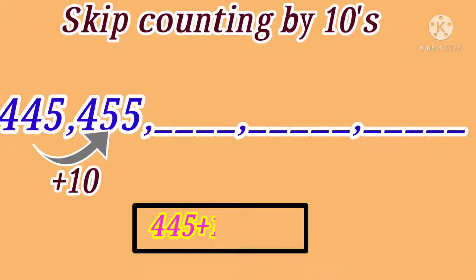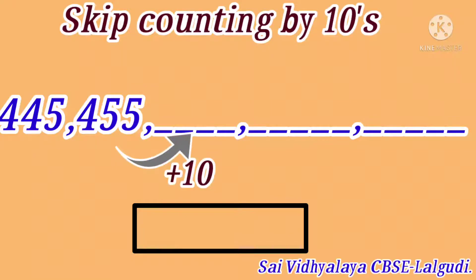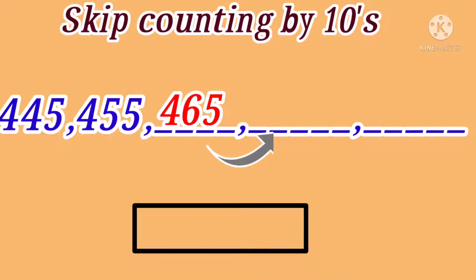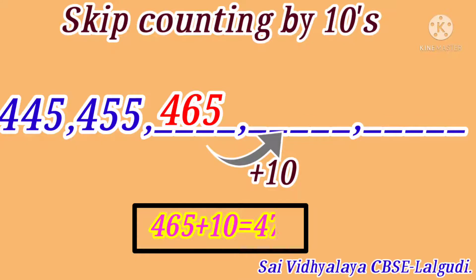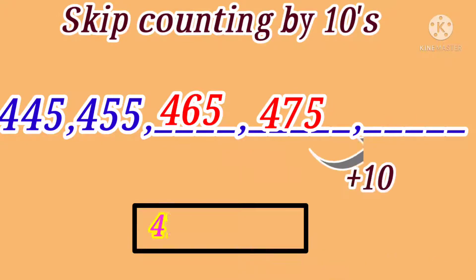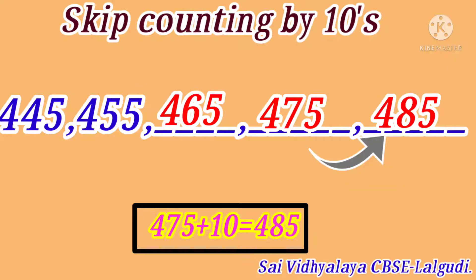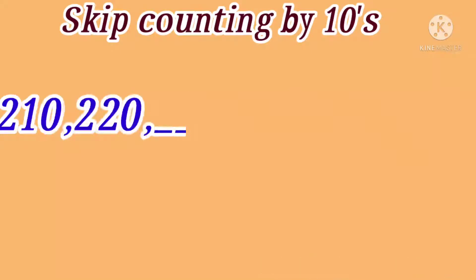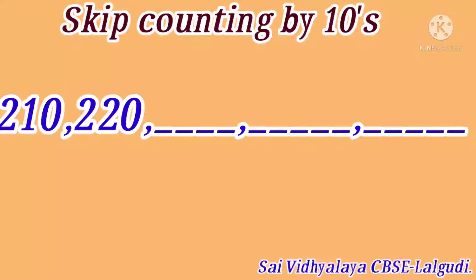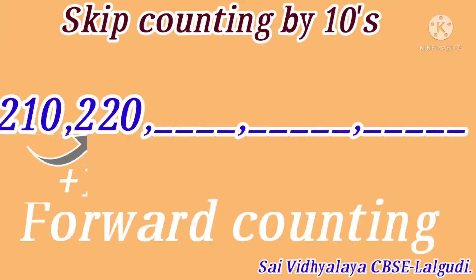445 plus 10 is equal to 455. 455 plus 10 is equal to 465. 465 plus 10 is equal to 475. 475 plus 10 is equal to 485. Next example: 210, 220. Here also the numbers are in forward counting order, so